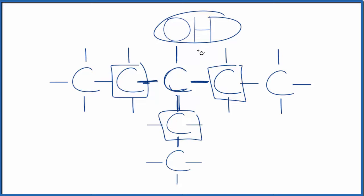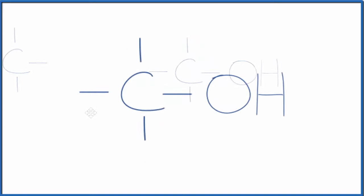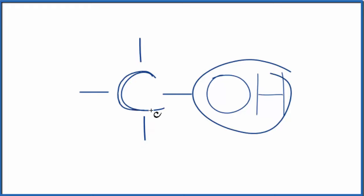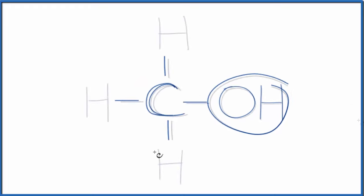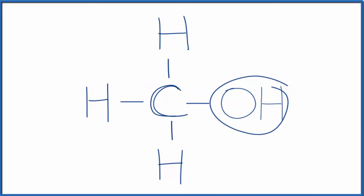This next one's a bit of a trick. This is methanol — we find the OH group, and here's the carbon, but this carbon's only bonded to hydrogens. They're not written, but they're there. Methanol's a bit of an exception; we call this a primary alcohol, even though the carbon's not bonded to any other carbons — just the way we do it.